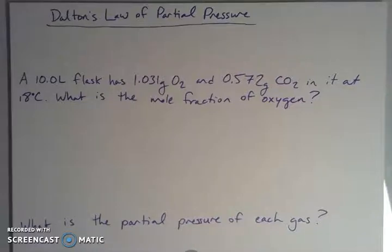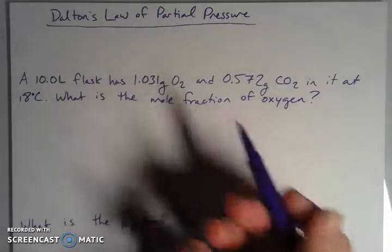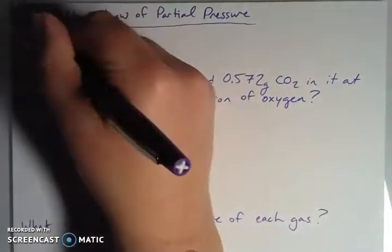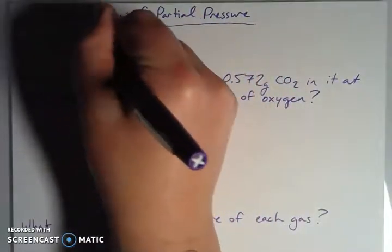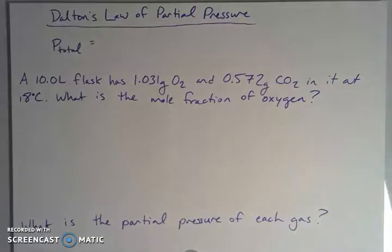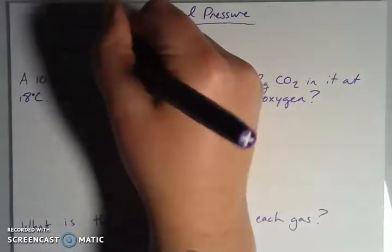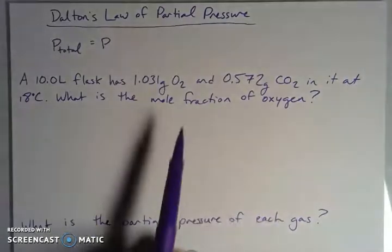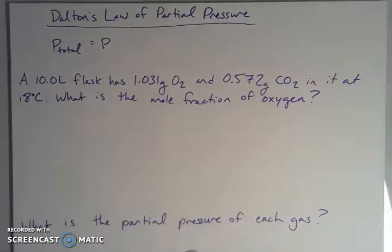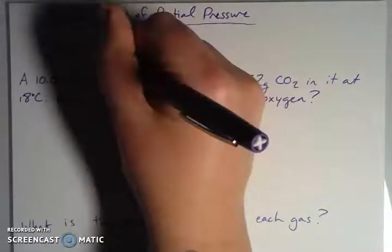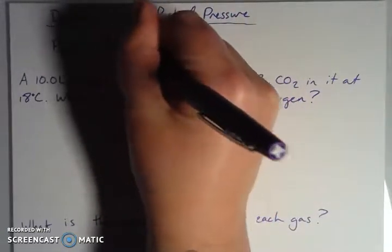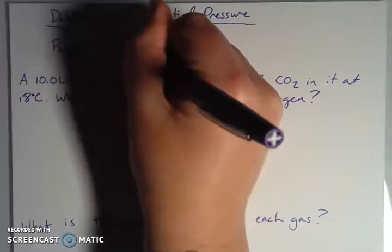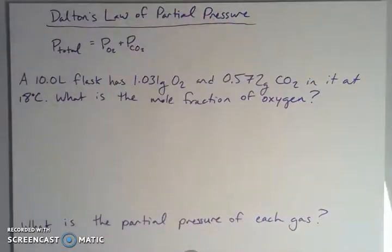And so I want to remind you of what Dalton's Law is. Remember, John Dalton of atomic theory fame also was studying gases and he said that the total pressure in a system, which we'll call P_total, is equal to the sum of the partial pressures. So if I have a system made up of oxygen and carbon dioxide, then the total pressure is going to be the partial pressure of the oxygen plus the partial pressure of the carbon dioxide.